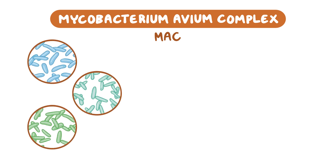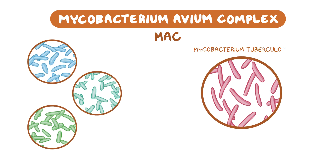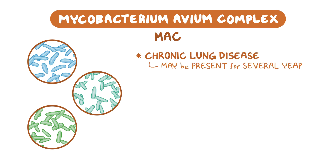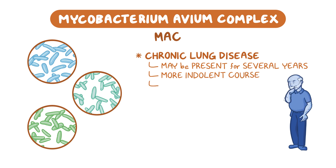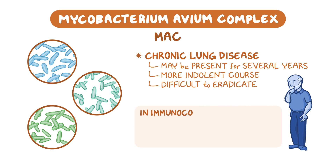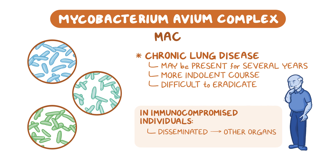MAC is very different from Mycobacterium tuberculosis. MAC lung infection is a chronic disease, often present for several years prior to diagnosis. It typically has a more indolent course and can be difficult to eradicate, with frequent recurrences after completing long courses of treatment. In addition, in immunocompromised individuals, MAC can become disseminated, affecting organs other than the lungs, and can cause lymphadenitis.